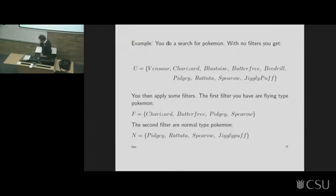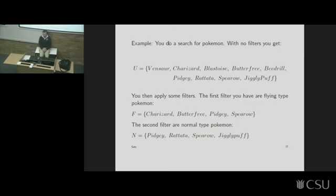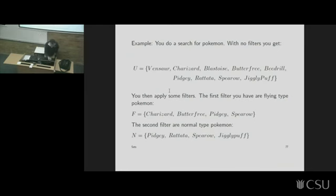Let's do an example using Pokemon — bringing it into your world. We've got a bunch of different Pokemon, and the Pokédex is essentially the database. That's the universal set U — all the potential entries. You can filter for the type of Pokemon: one type is flying type, another is normal type. So there are two different subsets — flying type F and normal type N — at the bottom.